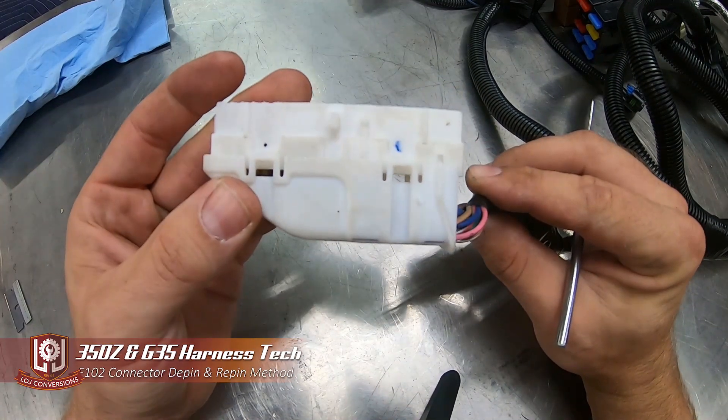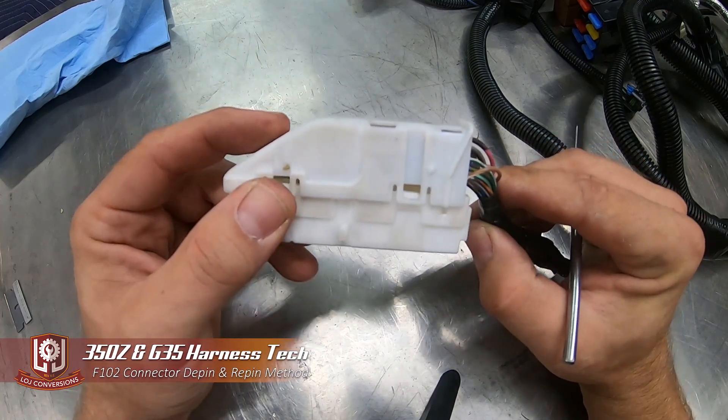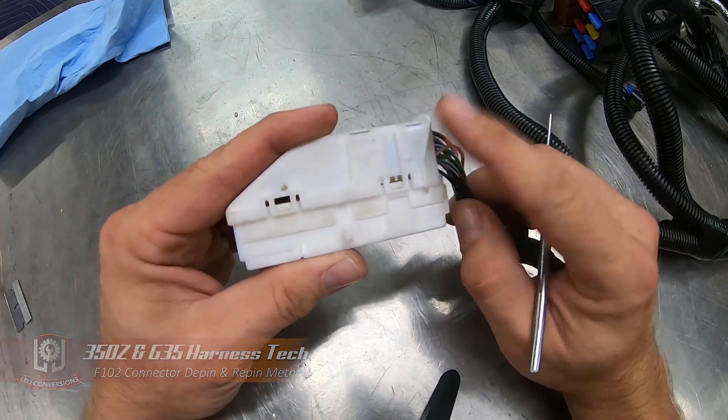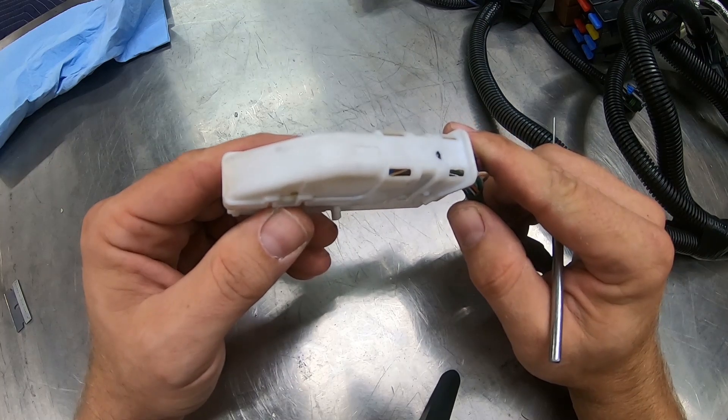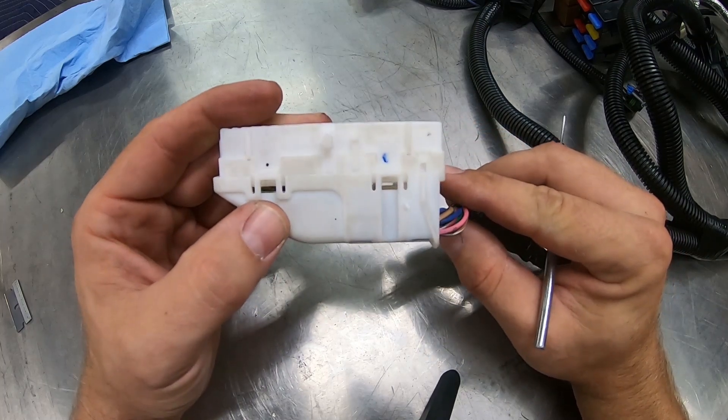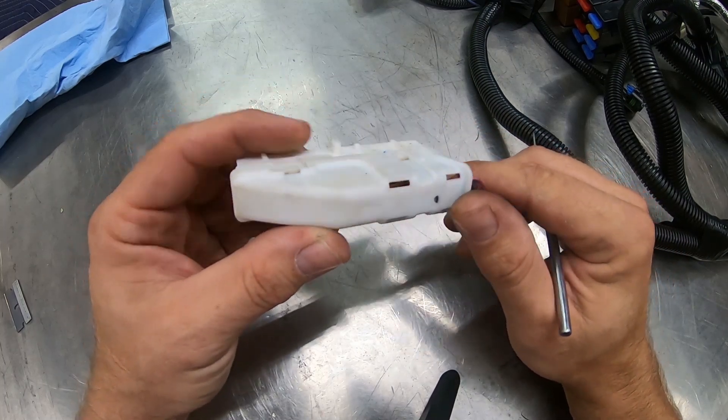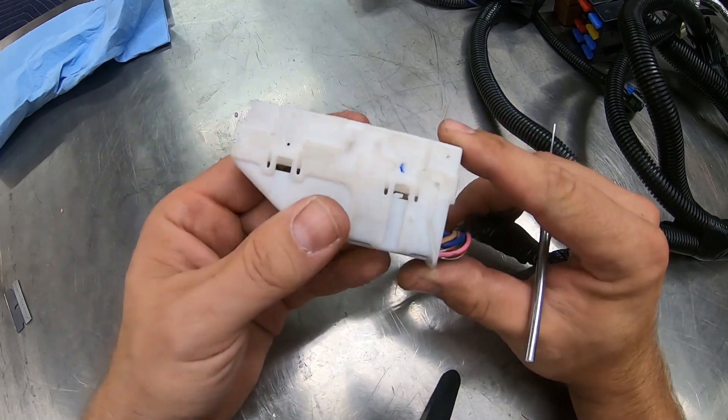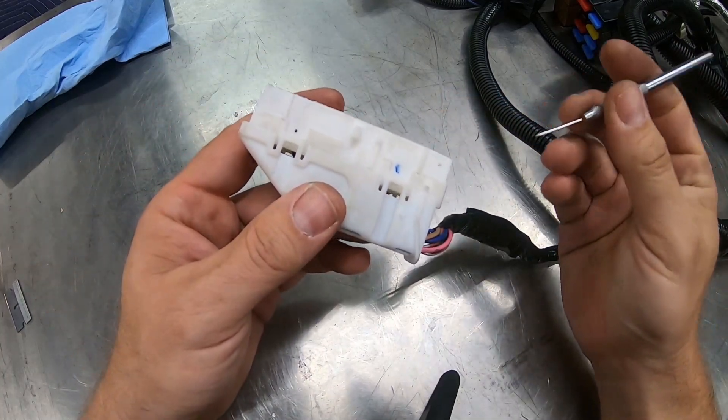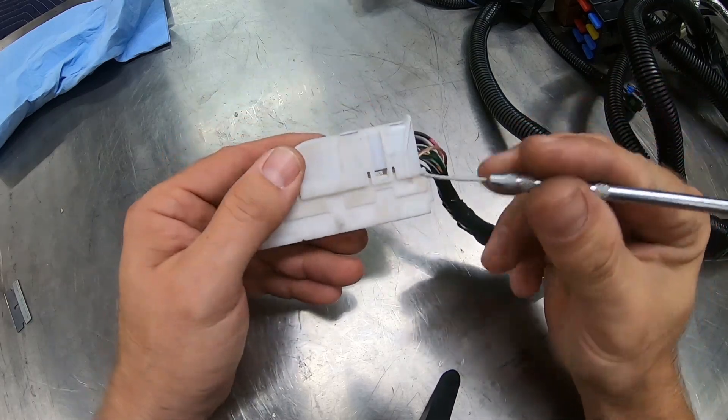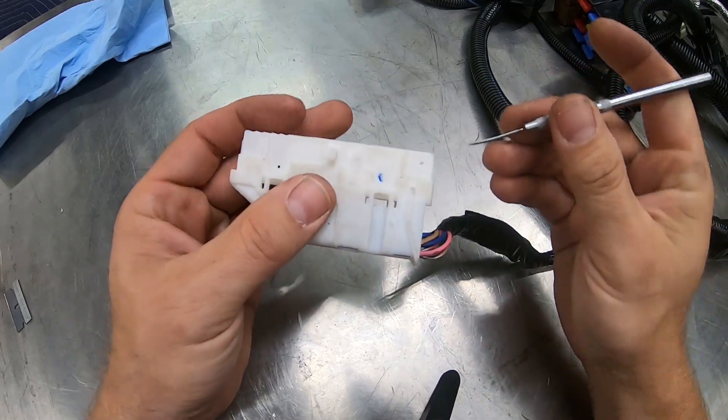Alright, so here we have the F102 connector on the 350Z and G35. This connector is found inside the vehicle near the ECU. It connects the engine harness into the main dash harness and some information is sent back and forth. This video is how to properly de-pin this connector. It's the most complicated connector to take apart on the entire harness installation.